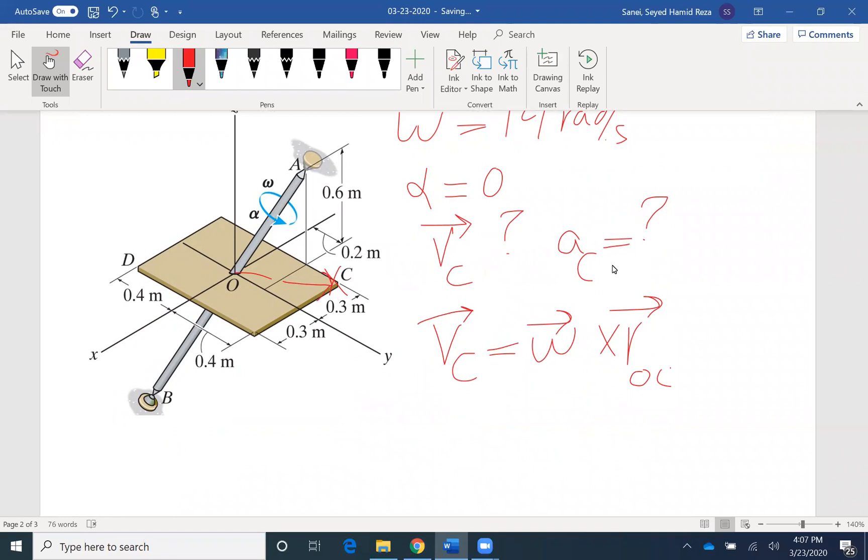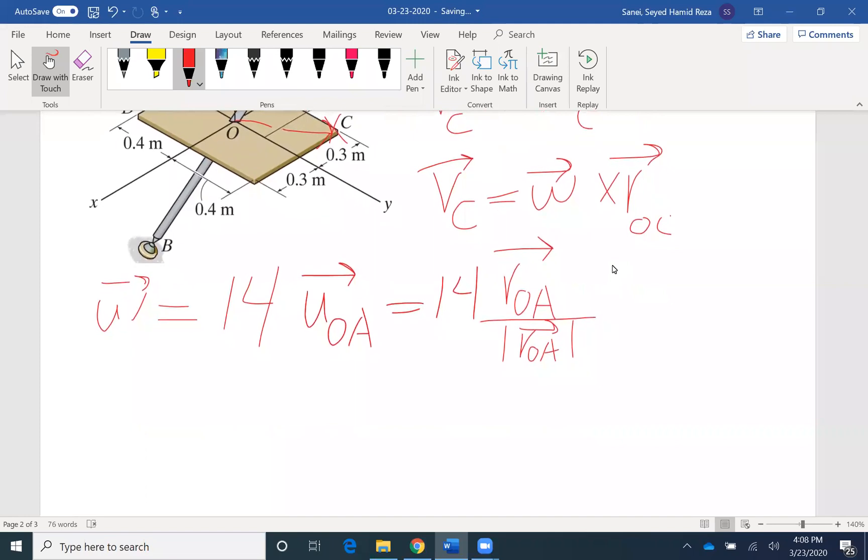But our first task is to find omega. Omega in vector form would be the magnitude 14 times UOA. I hope we remember from statics that the unit vector would be the position vector divided by its magnitude. So UOA would be ROA divided by the magnitude of ROA.